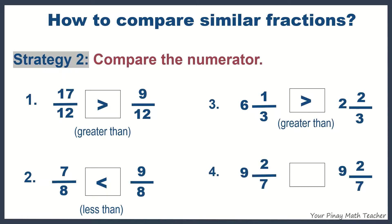Number four, nine-and-two-sevenths is compared with nine-and-two-sevenths. Obviously, they are equal.